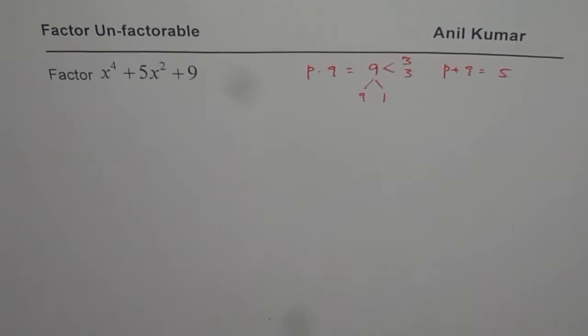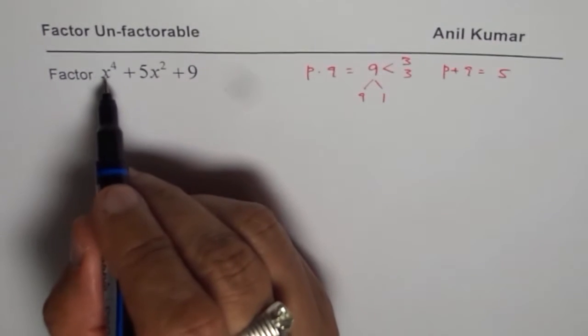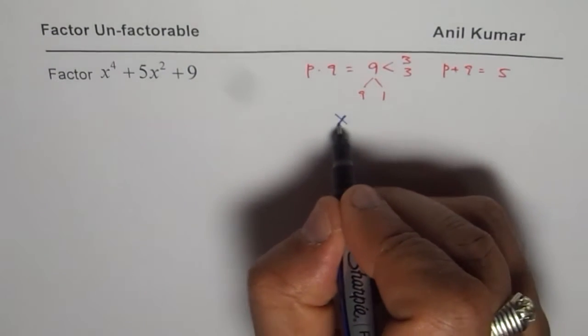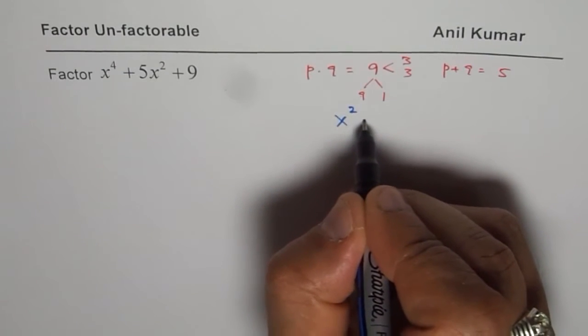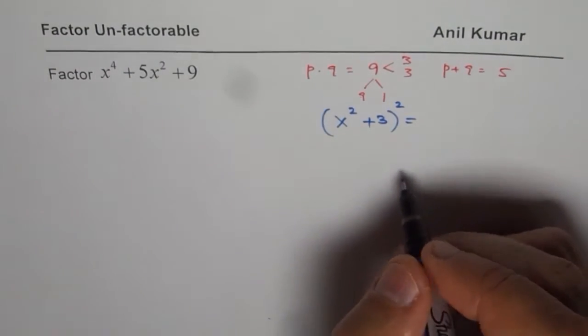Now the question is how to factor it. Well here is the strategy when 9 is 3 squared, think about it like this. This is square of x squared. So if I have x squared plus 3 whole squared, then what do I get?